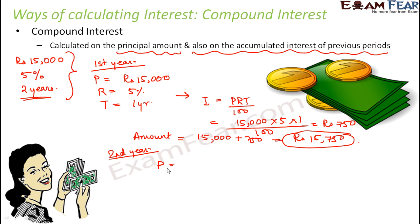For the second year, your principal amount will be the principal of the first year plus the interest of the first year — that means the principal for the second year is actually the total amount at the end of the first year, which includes the interest. So Rs. 15,750 is your principal for the second year.